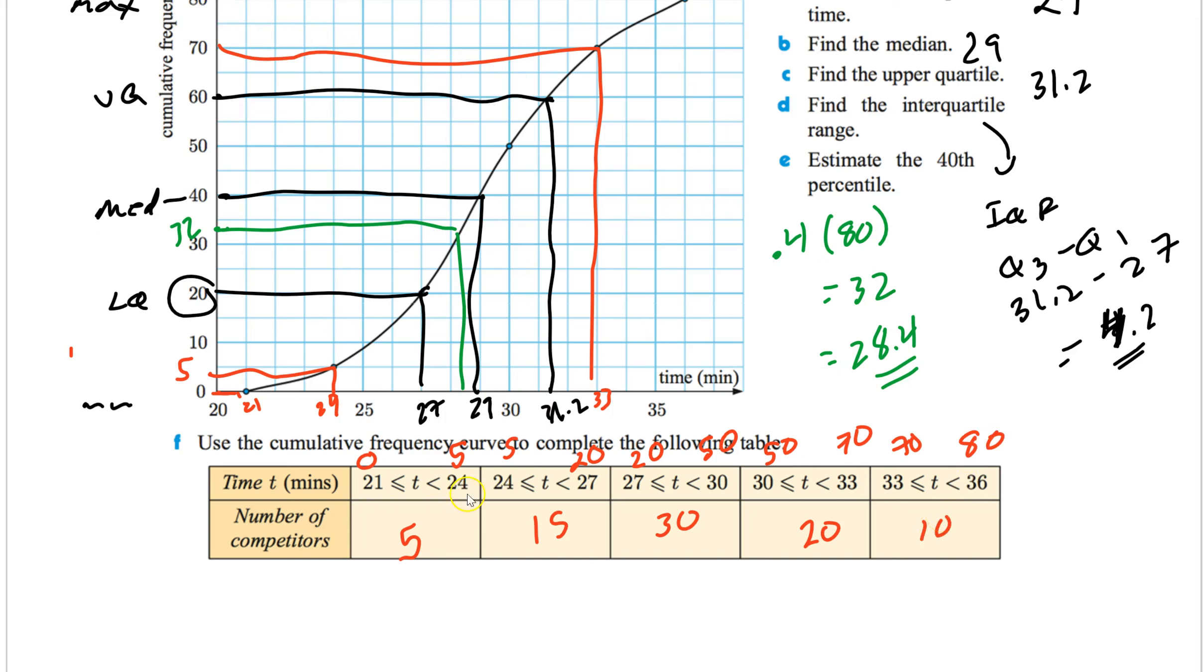So that's how you fill out, that's how you go backwards from a cumulative frequency graph. You always just look at these. What does 21 get you? What does 24 get you? Subtract. Oh, you already had 24. So now just figure out what 27 is. Subtract. And yada, yada, yada. That's it for that example.